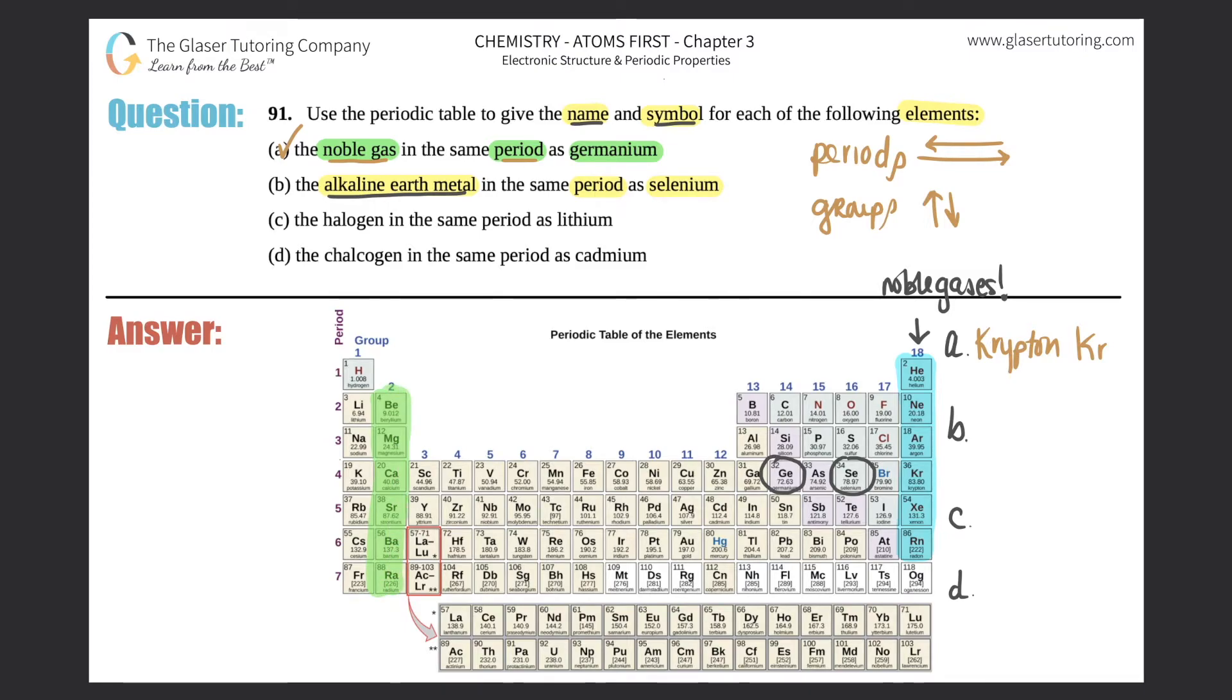Alkaline earth metals are in group two and that extends all the way from beryllium all the way down to radium. You guys need to memorize what the names of these specific groups are. So this group right here is your alkaline earth metals. Which one is it? It has to be in the same period. So if I scan all the way this way, it's got to be calcium. It's as simple as that. So b would be calcium and the symbol is Ca.